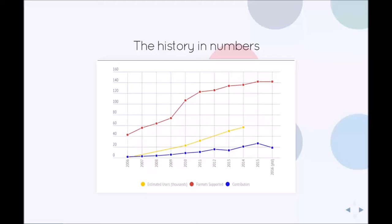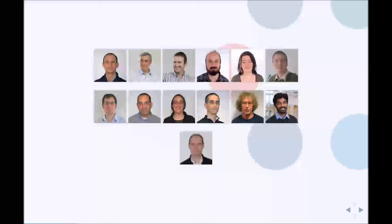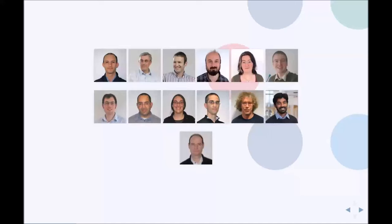You can also see the number of contributors in blue at the bottom. This is the number of people in OME and from the community who have authored at least one git commit that has passed our code review and continuous integration testing. This number has grown from just a few in 2006 to 27 in 2015 and 19 to date in 2016. A large factor in this increase in contributors is the fact that we now have a much larger percentage of the whole OME team engaged in working on Bioformats.